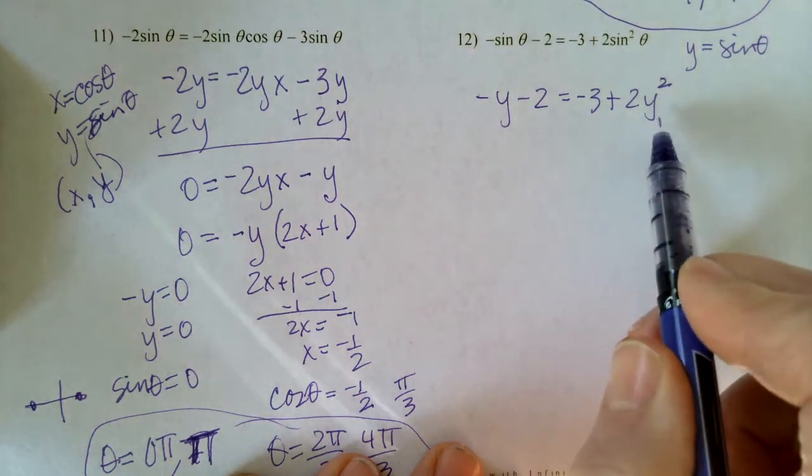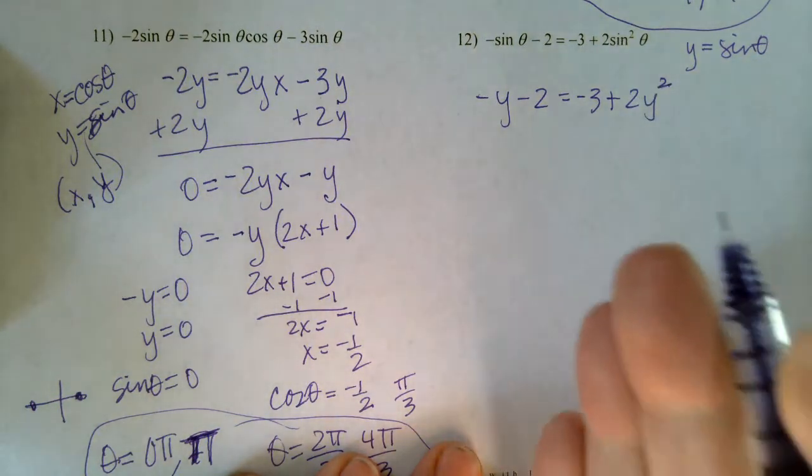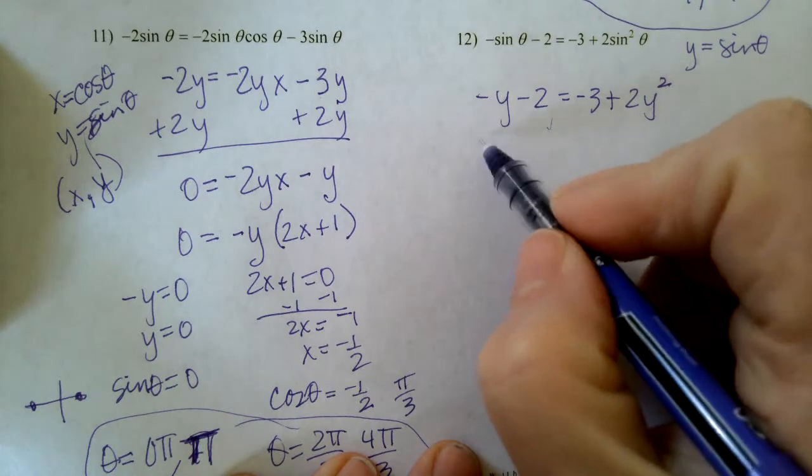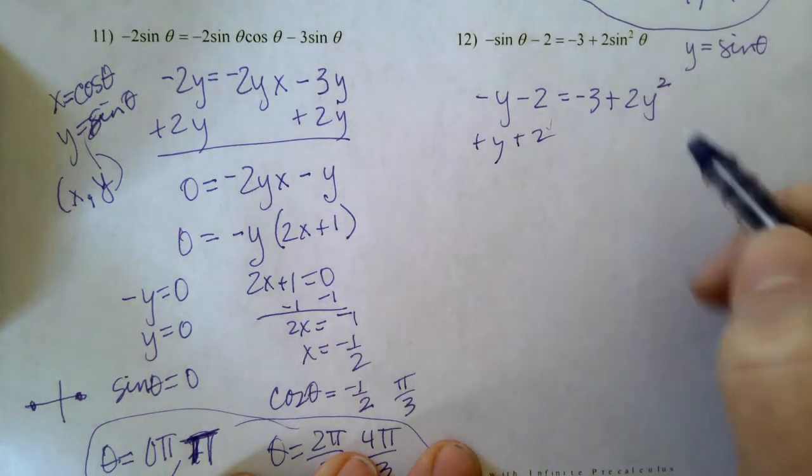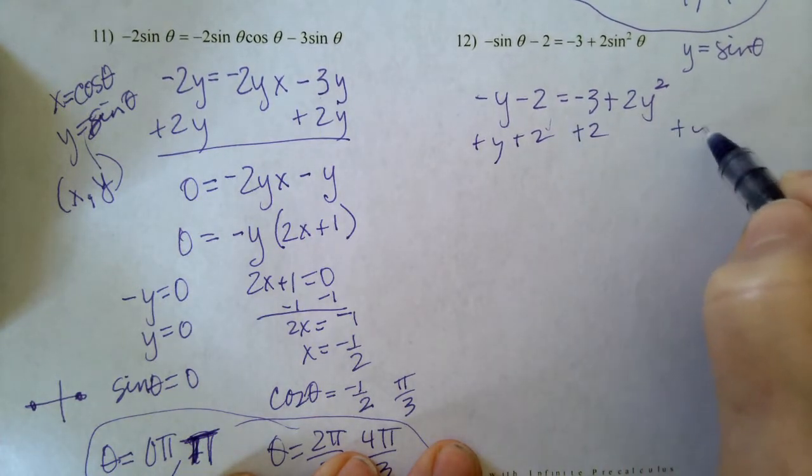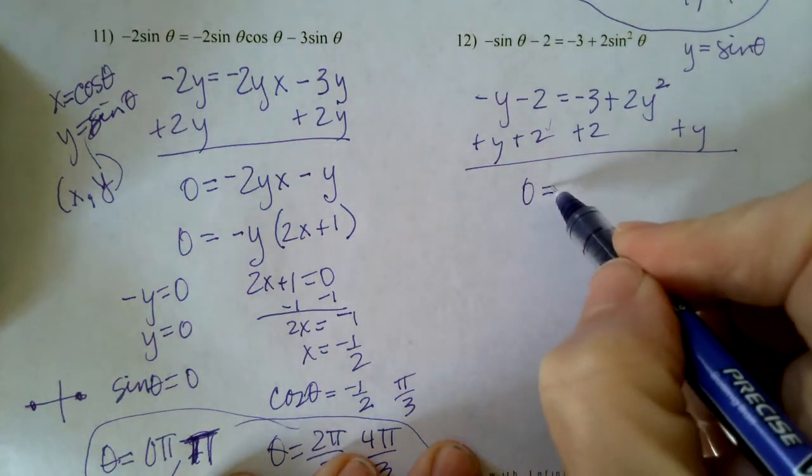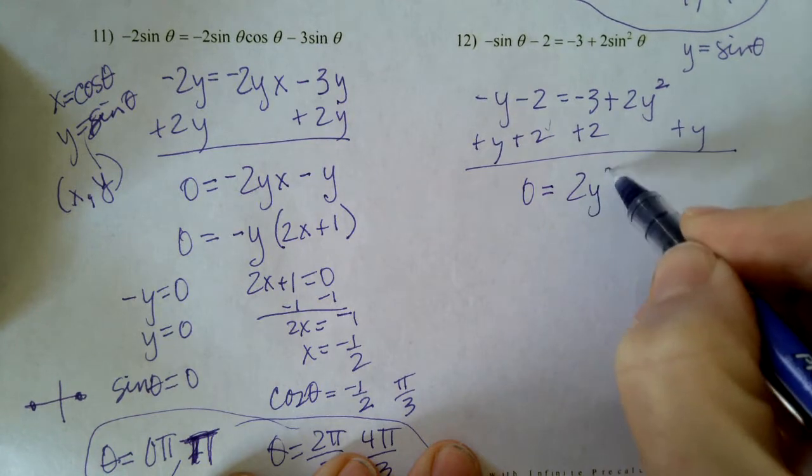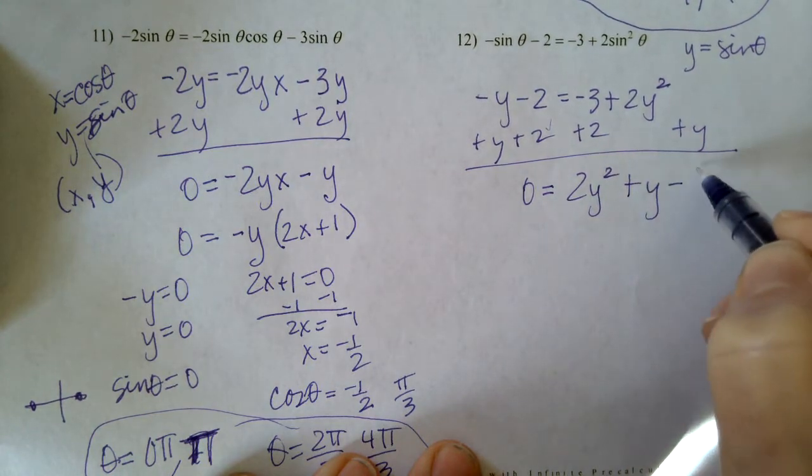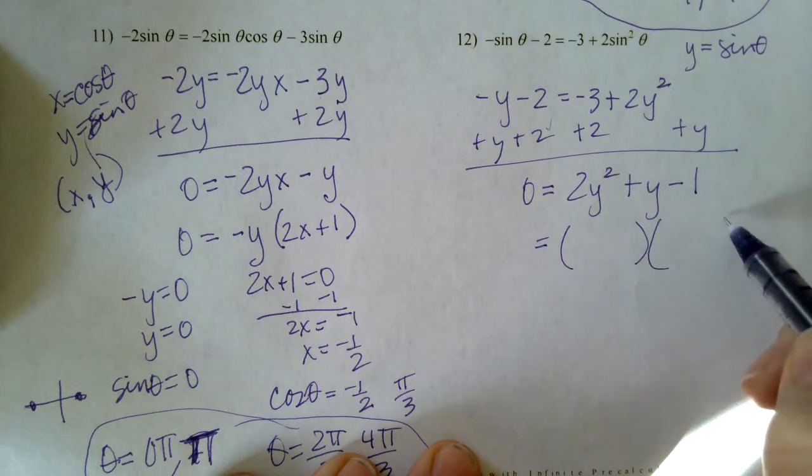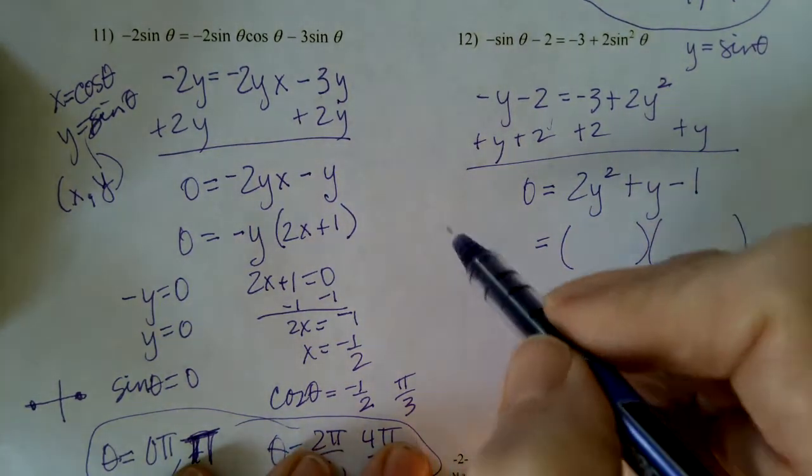So this is negative y minus two equals negative three plus two y squared. It doesn't have two variables, but I do have a squared in it. So I'm going to want to get everything on one side and factor. So I'll add the y and add the two on both sides. And I'm going to rearrange this. So zero equals, I'll bring the two y squared first, plus y minus one.